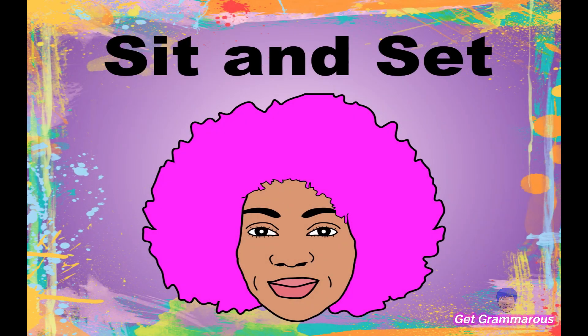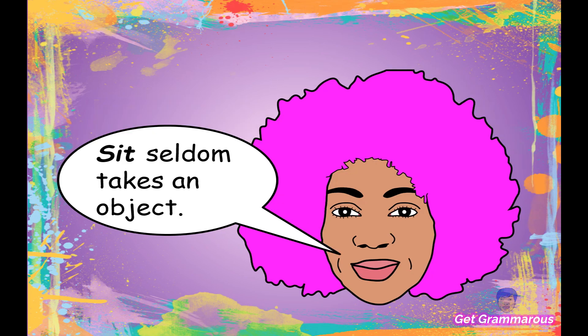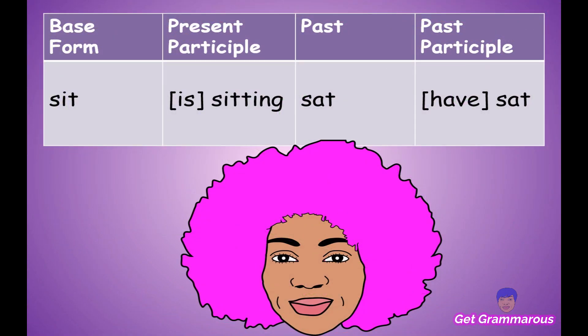The verb 'sit' means to be in a seated upright position or to be in a place. Sit seldom takes an object, meaning the verb is not done to anything. The base form is 'sit,' the present participle is 'sitting,' the past tense is 'sat,' and the past participle is 'have sat' or 'has sat,' depending on whether the subject is singular or plural.